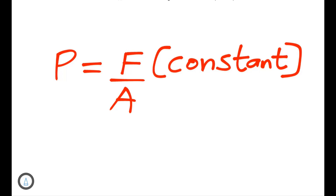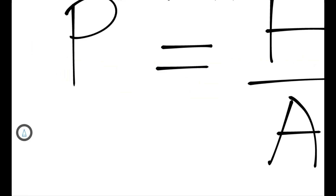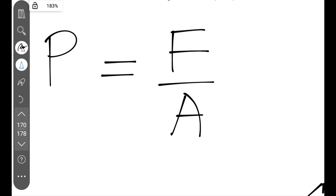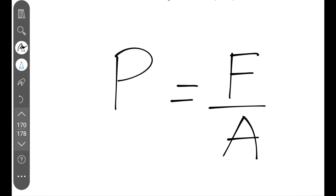From that understanding we get two expressions. To get minimum pressure, the area of contact should be maximum. To get maximum pressure, the area of contact has to be minimum. The force is kept constant — if it is the weight, we keep the same object and maintain the same weight.